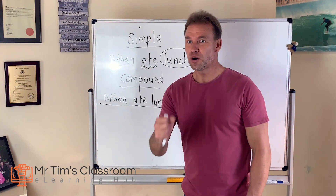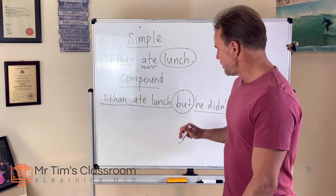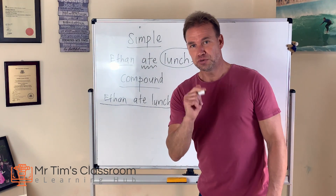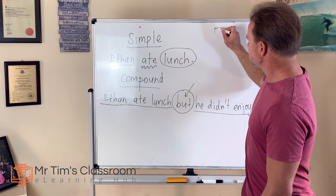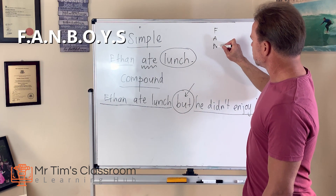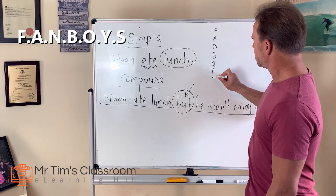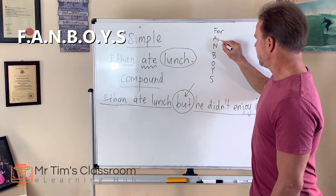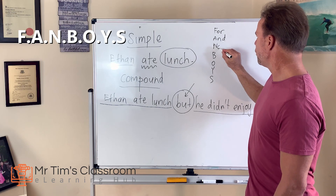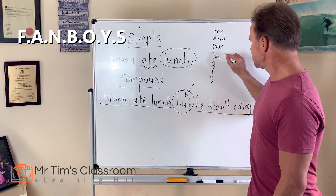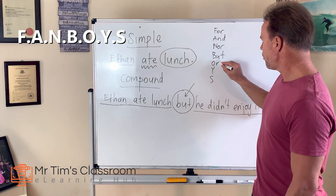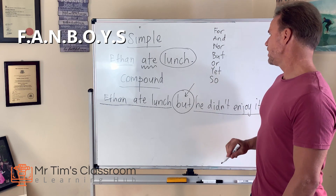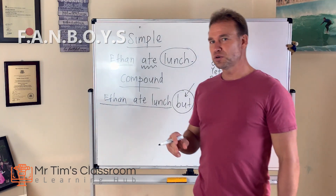A really good way to remember more of these words, which are called conjunctions, is to remember the acronym FANBOYS. F stands for 'for', A for 'and', N for 'nor', B for 'but', O for 'or', Y for 'yet', and SO is the last one. FANBOYS — these words are called conjunctions.